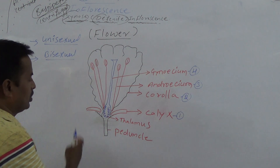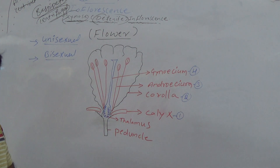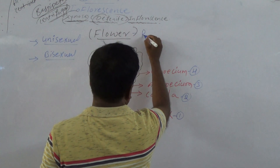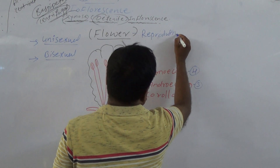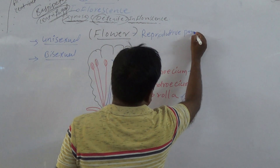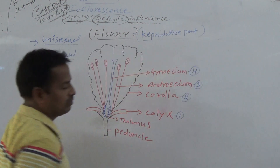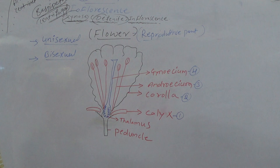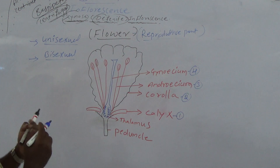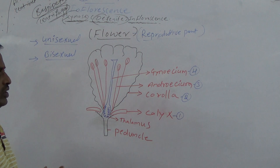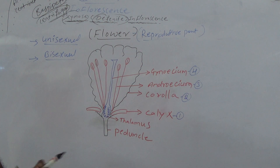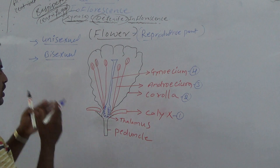Hi students, today's topic is the flower. So what is a flower? The flower is a reproductive part of a plant. Flowering plants produce flowers for reproduction to give new ones — to generate and produce offspring in every generation, which is necessary to continue the life of the plant. That is the purpose.